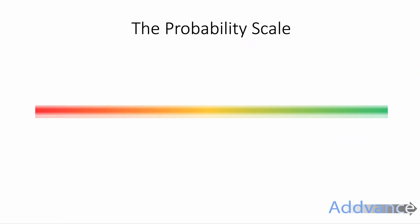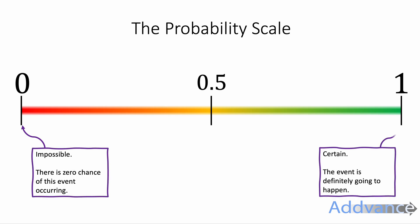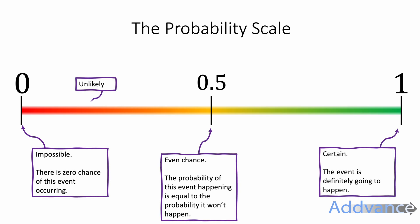Probability is measured on a scale from 0 to 1, like this, where 0 represents impossible events and 1 represents certain events. In the middle we've got 0.5 or a half, which means events that are half the time going to happen and half the time not. Less than 0.5 represents unlikely events and more than 0.5 represents likely events.